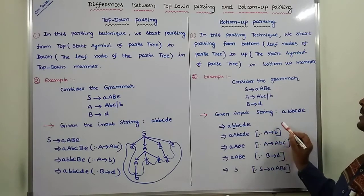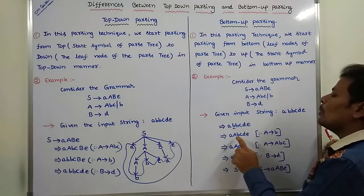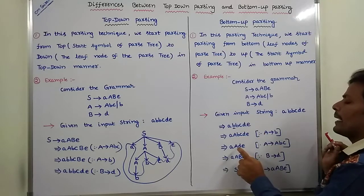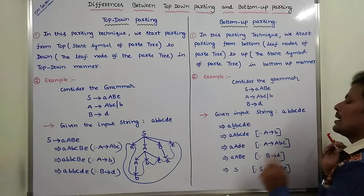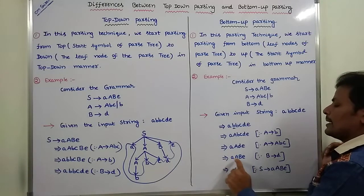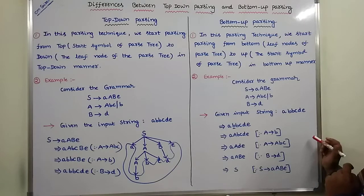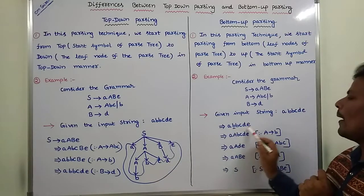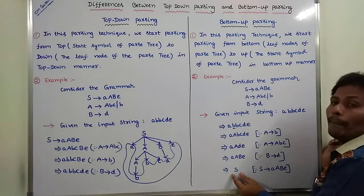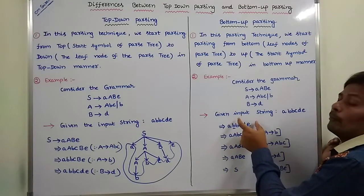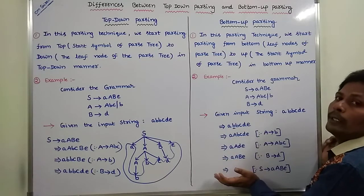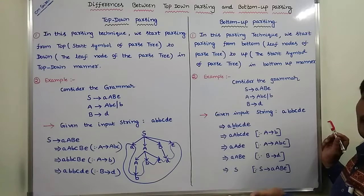By using the production, we reduce small b into capital A. Next, we reduce capital A, small b, small c by capital A. Next, capital B, small d is replaced by capital B. By using this production, the derivation is reduced by the start symbol. We are starting from leaf nodes of the parse tree upward to the start symbol.